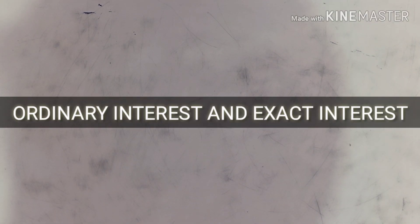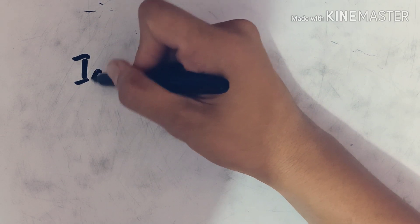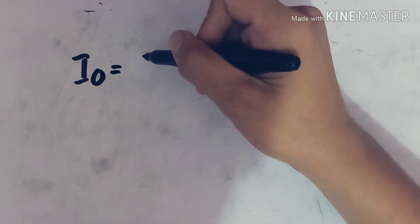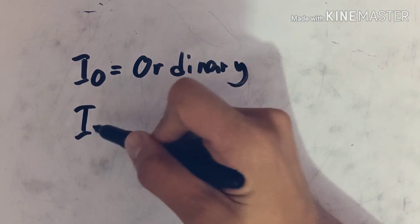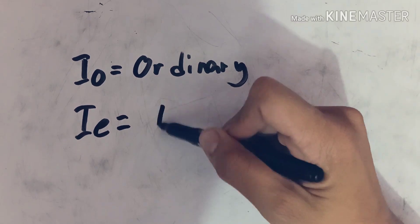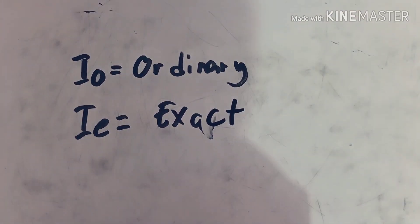Good day everyone, this day we're going to learn kinds of simple interest: ordinary interest and exact interest. There are two kinds of simple interest. First one is the ordinary interest which the symbol is I sub O, and exact interest, the symbol is I sub E. These two use the same formula for solving the simple interest.